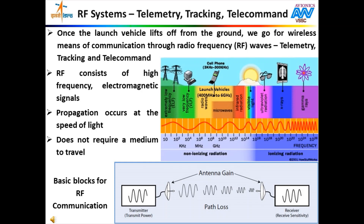Now let us have a brief overview of RF systems used in launch vehicles. You must have wondered how a rocket communicates with the ground once it lifts off from the launch pad. Though all physical connections are broken, we still communicate with the rocket continuously through wireless means using high frequency radio waves. Different types of waves are present in our universe as depicted in the electromagnetic spectrum — microwaves, visible light, X-rays and radio waves all play a very important role in our day-to-day activities.